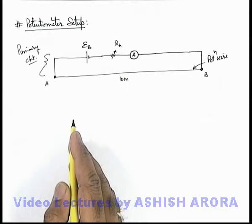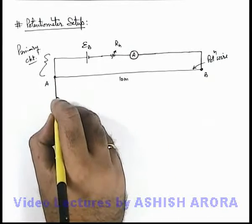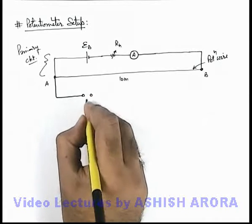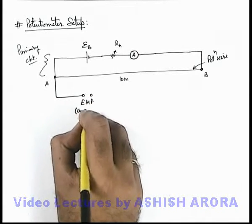And on the other side of this potentiometer wire, we connect the potential difference or EMF to be measured. This is the unknown EMF which we wish to measure.